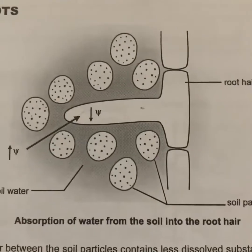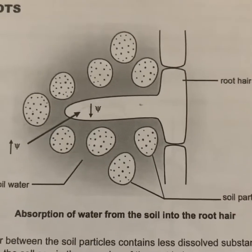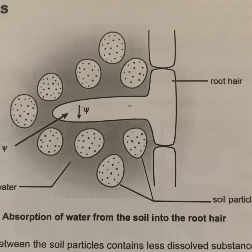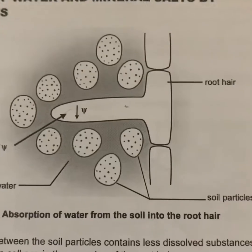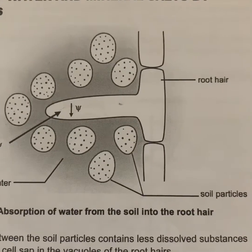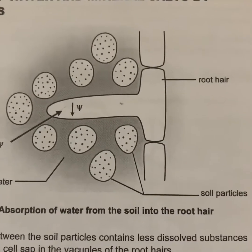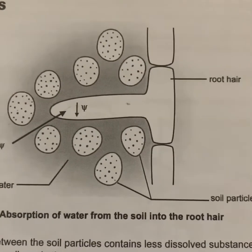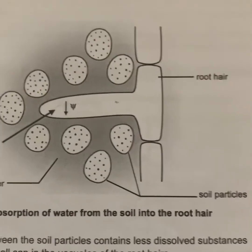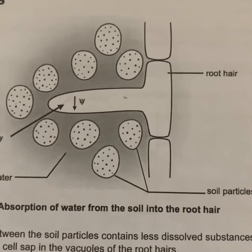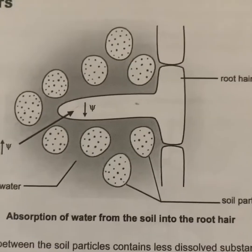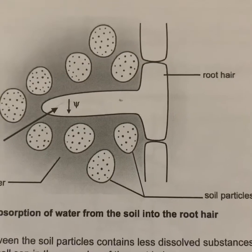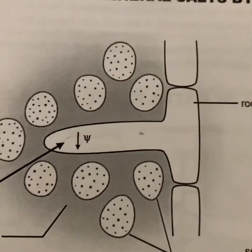The soil water has a higher water potential compared to the root hair because there are fewer solutes in the soil water compared to the cell sap of the root hairs. This results in a water potential gradient being formed and osmosis taking place, where water moves from the region of high water potential in the soil water to a region of low water potential in the root hair.